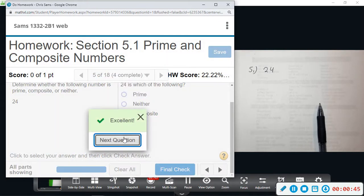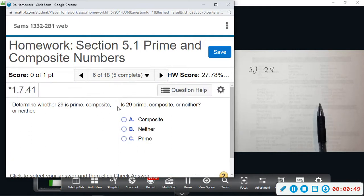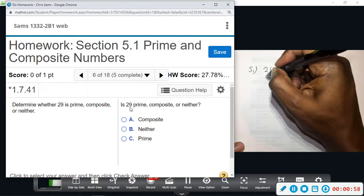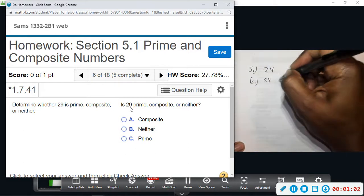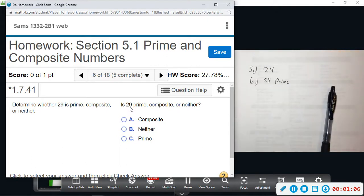29. Is this number prime or composite or neither? 29 fell into that group of prime numbers. It's a prime. Only has two factors, one and itself. So that will be considered as prime.